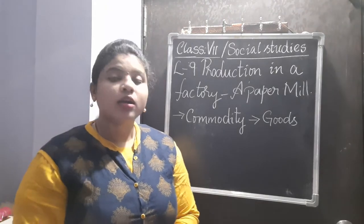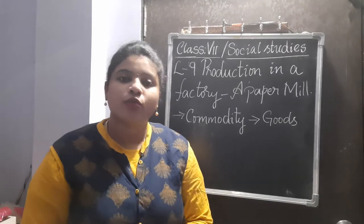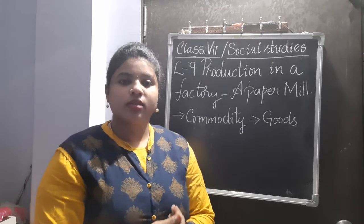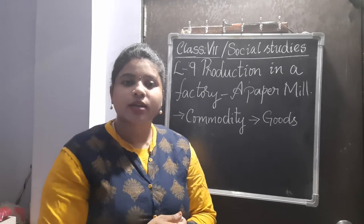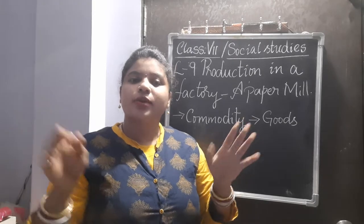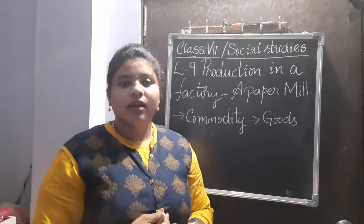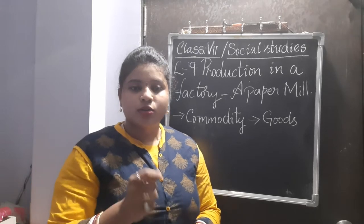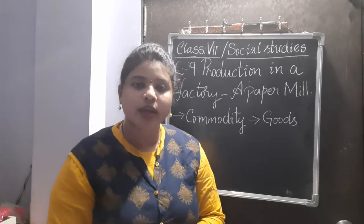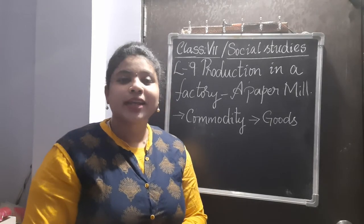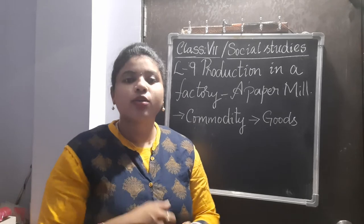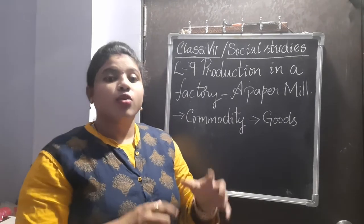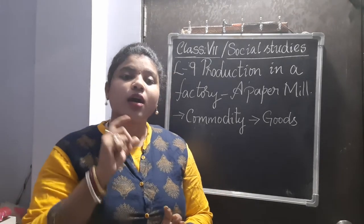Every product needs some raw materials to make it a finished product. For example, you sit on wooden benches. Those wooden benches - the wood comes from the trees. The wood has to be cut into pieces, cut into rectangular or horizontal pieces, then made into a proper shape. They use some nails, some Fevicol-type glue, and in some benches they also use iron rods to make it more strong. These are all raw materials for making benches.